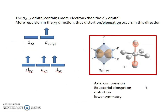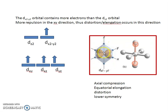This slide tells a similar story. The dx²-y² orbital is fuller, which means there is more repulsion in the x-y direction. This greater repulsion results in elongation in the x-y direction. Axial compression and equatorial elongation are the same type of distortion, and both result in a lower symmetry.